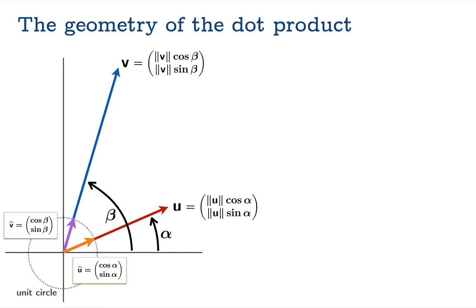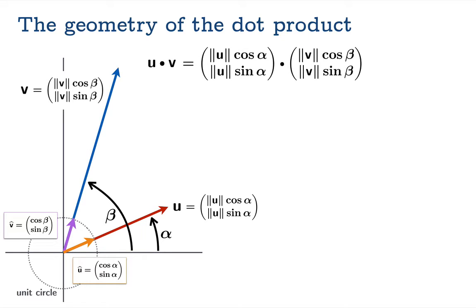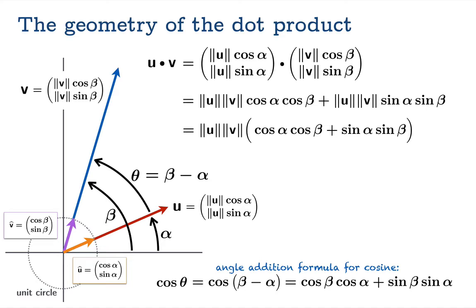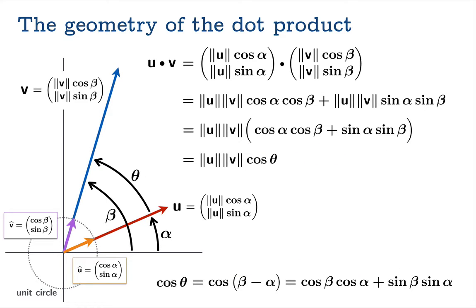Similarly, v = (||v|| cos β, ||v|| sin β). Now we're ready to take the dot product. Computing u·v, we factor out ||u||·||v|| and get a big trigonometric expression. Defining the angle θ = β − α between the vectors, the trig expression becomes cos(β − α) by the angle difference formula: cos β cos α + sin β sin α = cos θ. So the dot product is u·v = ||u||·||v||·cos θ.